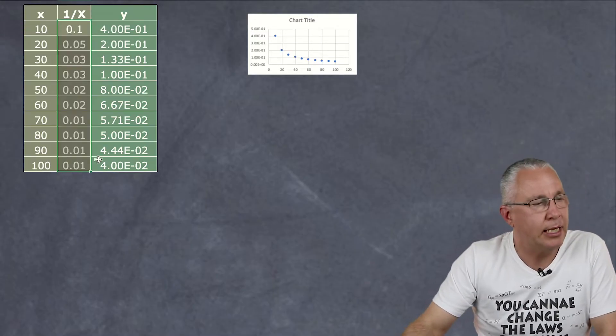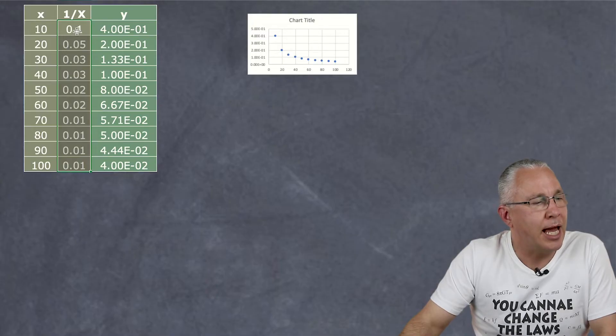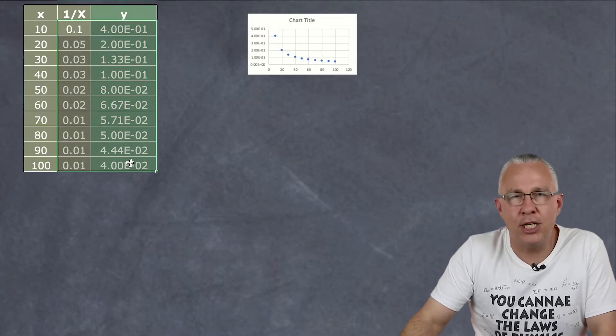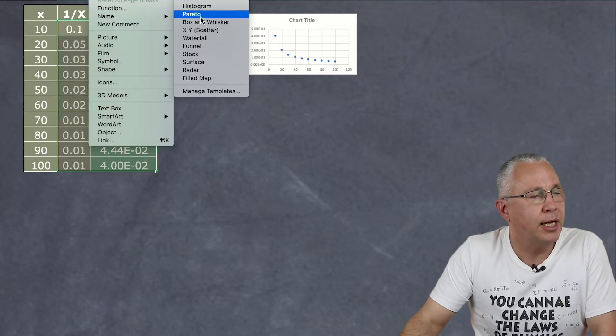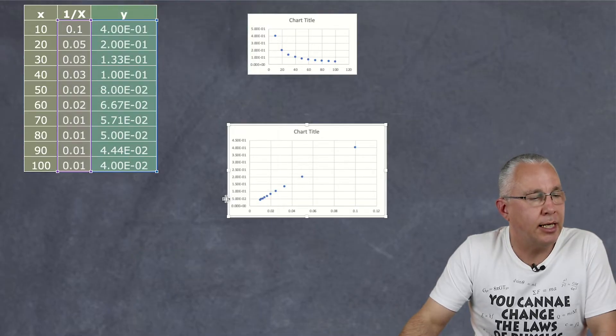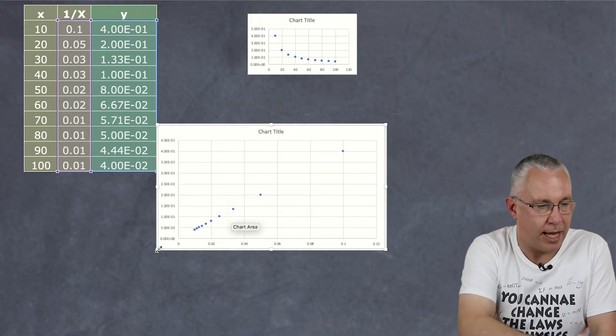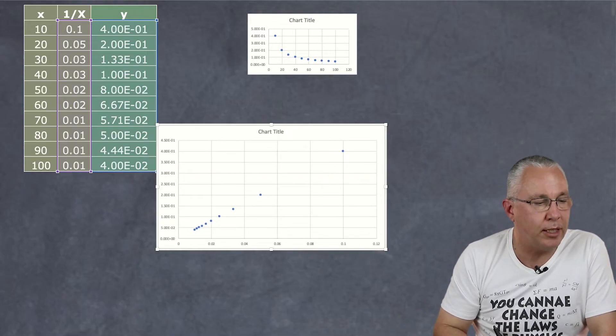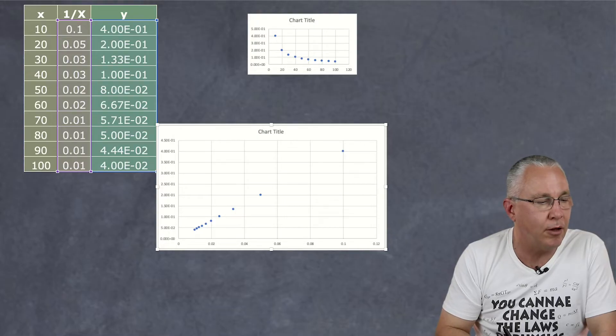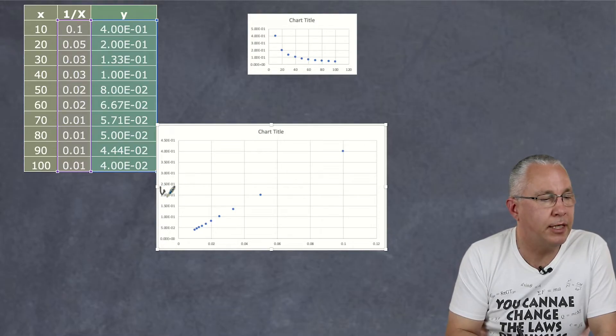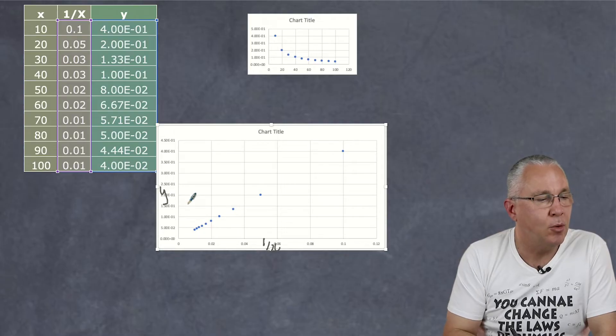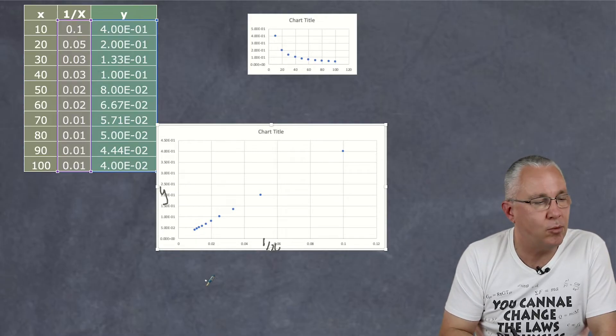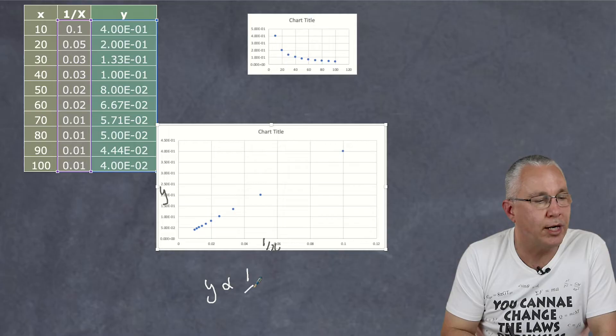The one over X will be on the bottom. So therefore I'm going to insert a chart and this case an XY scatter and hey presto I get a lovely straight line. Now again let me remind you here of what the labels here are on the axis. This is still Y over here but now on this axis I have 1 over X. Now what's the mathematical relationship? Well clearly I'm getting a straight line so Y is proportional to 1 over X.